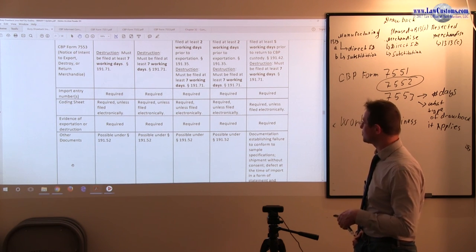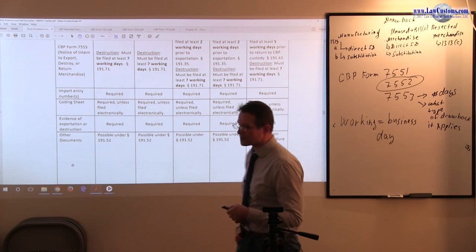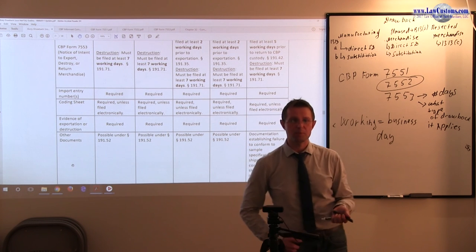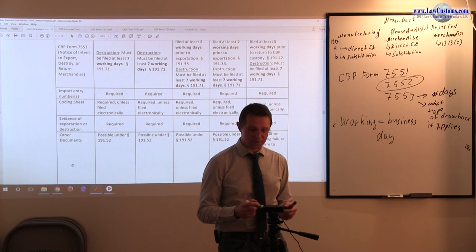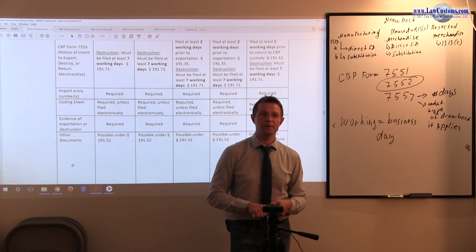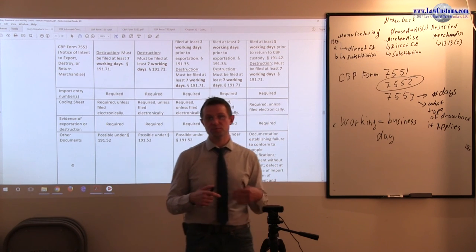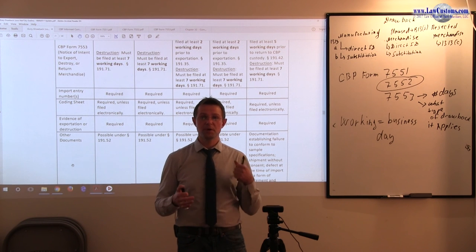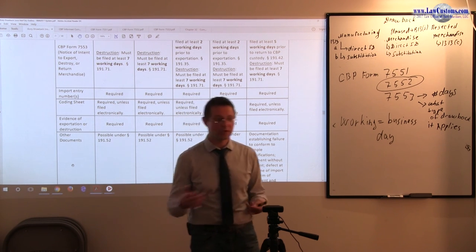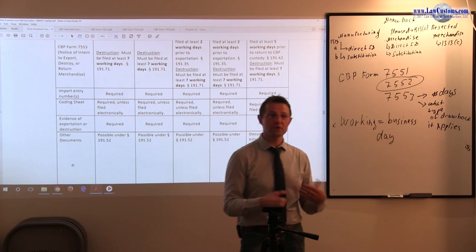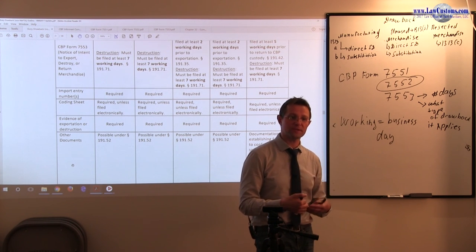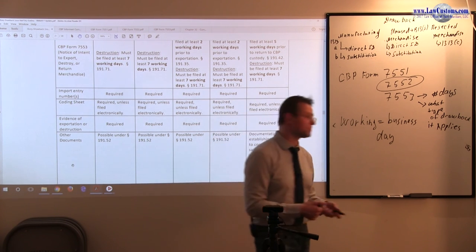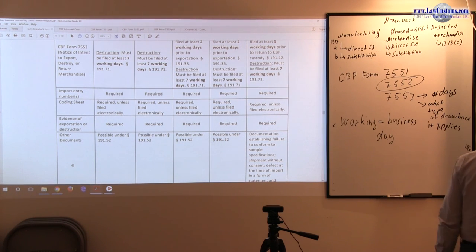And other documents, they are possible because sometimes customs would like to ask for supporting documentation if they are not satisfied with the basic bare bones application. So they can ask for the entry documents and the commercial invoices. They can ask for, sometimes they can go even further. They request records that would relate to the fact of the importation by asking for such thing as the timesheet records of the employees who participated in the production of the merchandise which was originally imported. If customs feels like there is more questions to ask, because the entry for one reason or another looks suspicious, they reserve the right to do that under section 191.52.